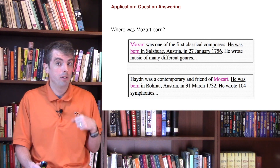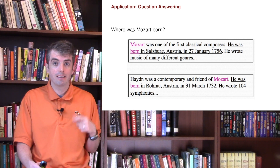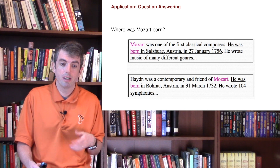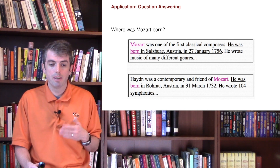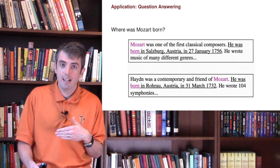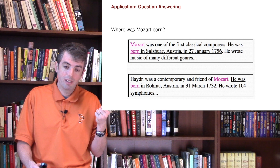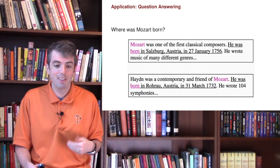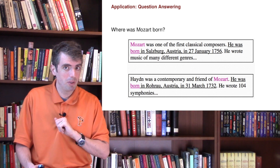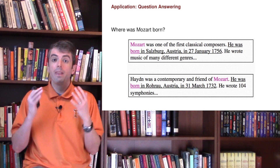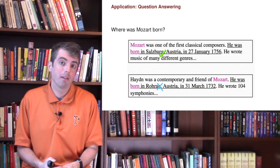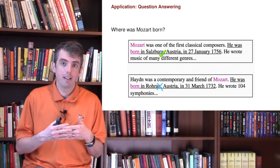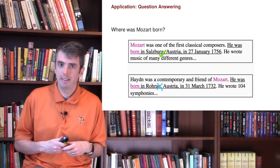You wouldn't get tripped up by text like: 'Haydn was a contemporary and friend of Mozart. He was born in...' Even though Mozart is closer to 'he' there, a smart co-reference system could figure out that's not actually talking about Mozart — that's talking about Haydn. That is the challenge: actually figuring out which strings refer to which entities.